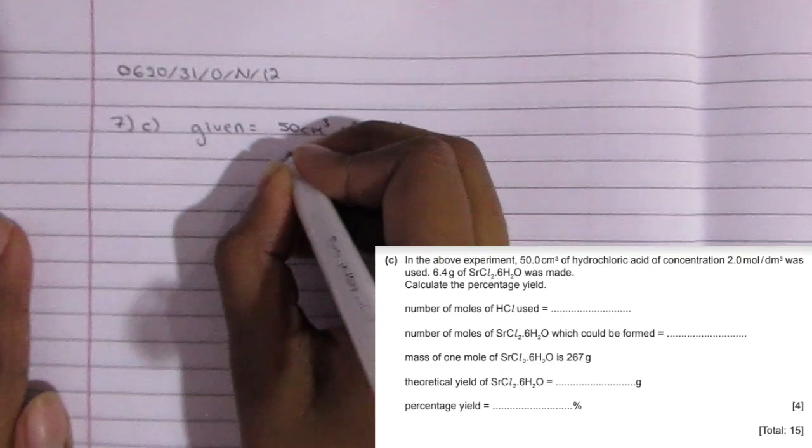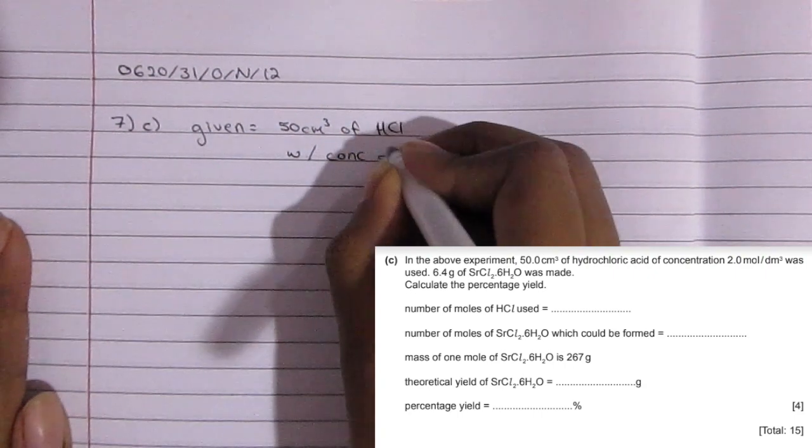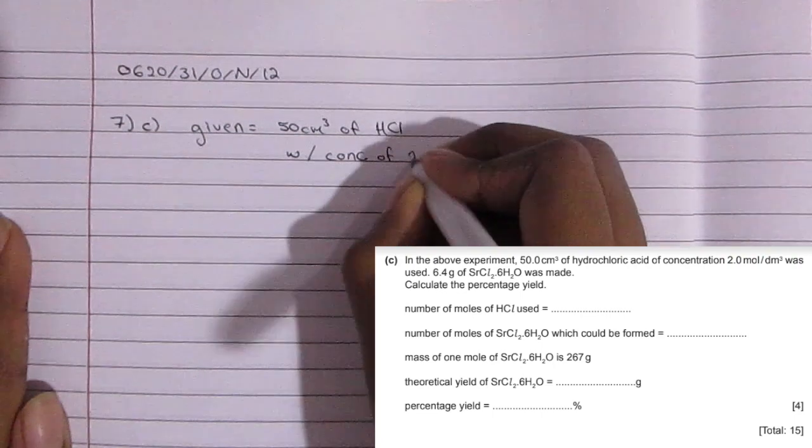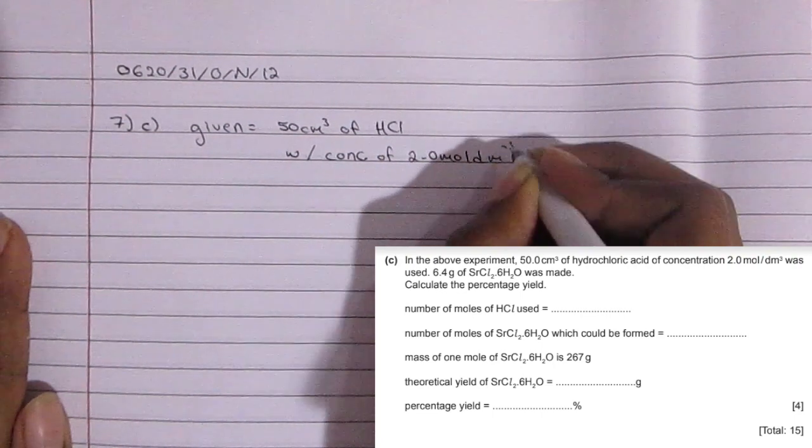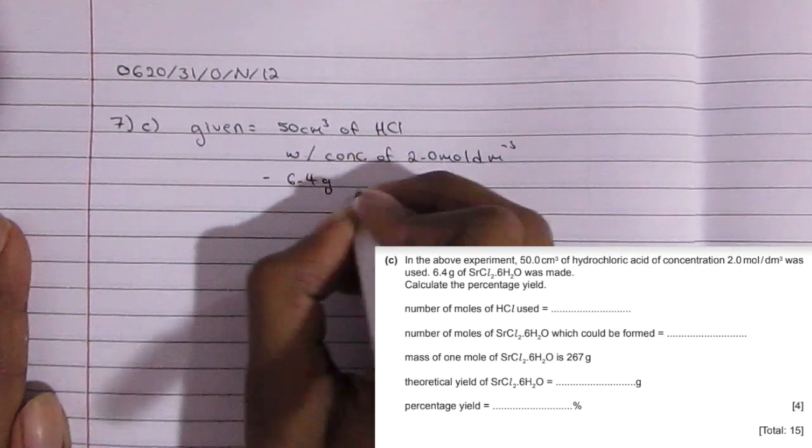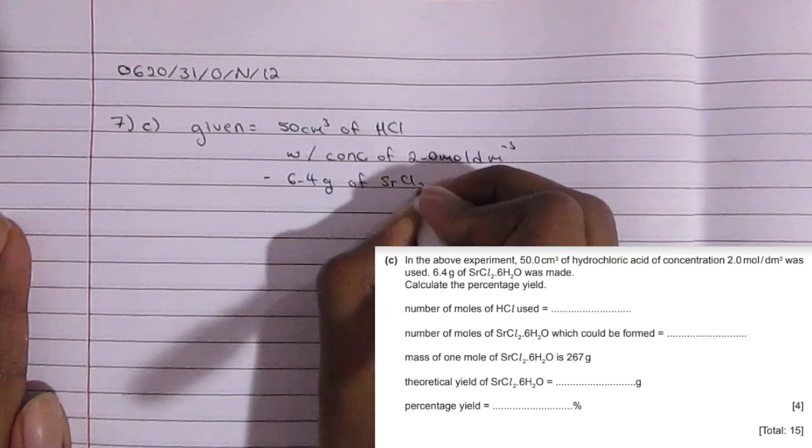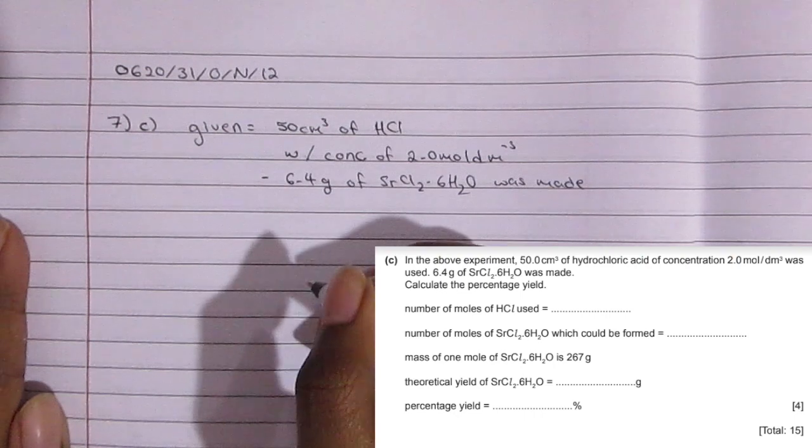So basically in the above experiment, 50 centimeters cubed of hydrochloric acid was used and it has a concentration of 2.0 moles per decimeter cubed. And then they also told us that 6.4 grams of strontium chloride hexahydrate was made, or in other words, hydrated strontium chloride.